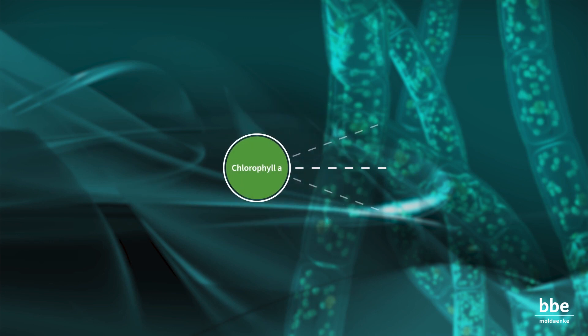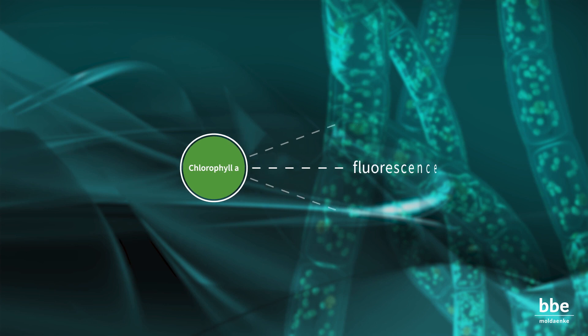A small part of the absorbed energy is emitted by the main photosynthetic pigment, chlorophyll A, as fluorescence.